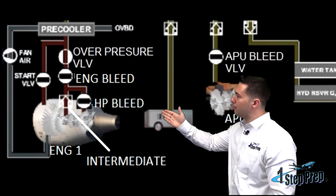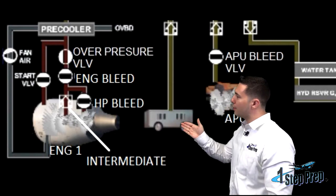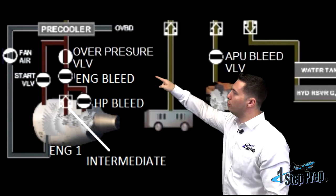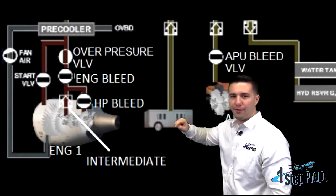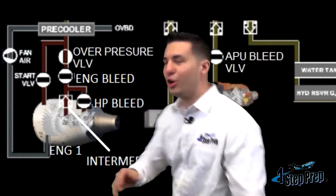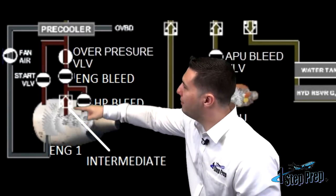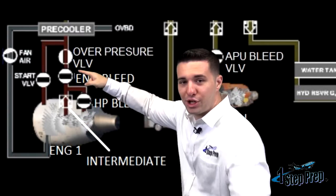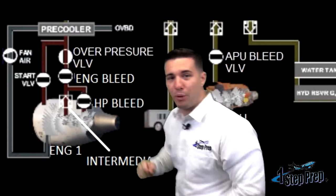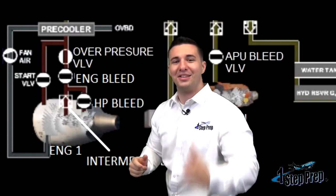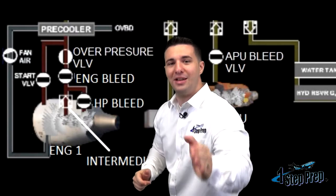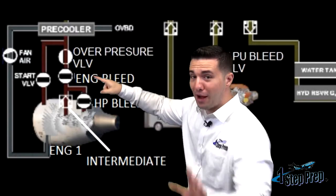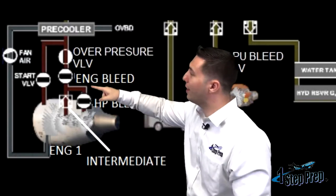Both the intermediate pressure and the high pressure will go up through a bleed valve. Once the air goes through the engine bleed valve, it passes through an overpressure valve, which is controlled by the BMC — the bleed monitor computer — controlling these valves, just like we mentioned earlier.